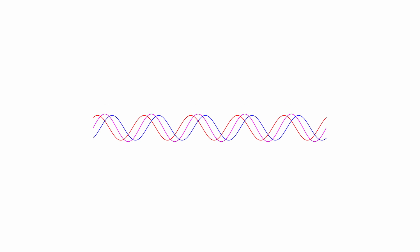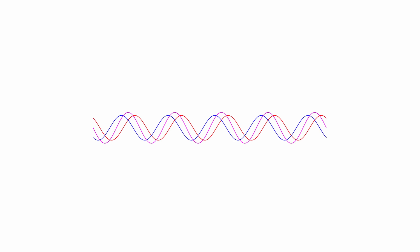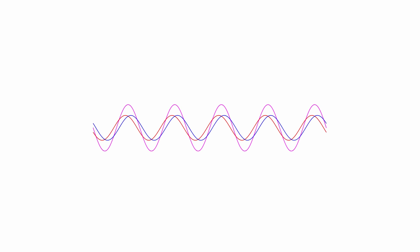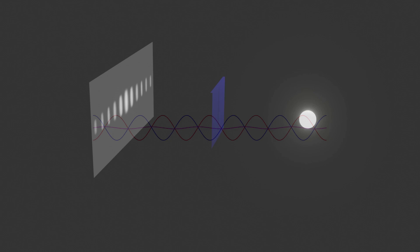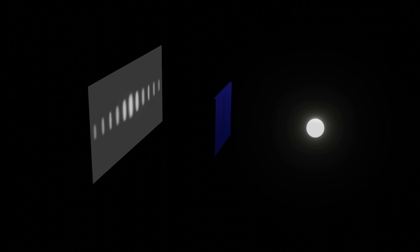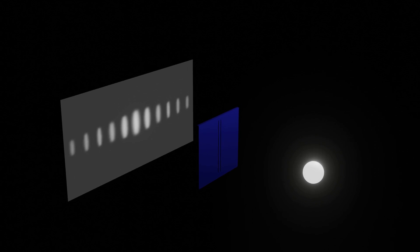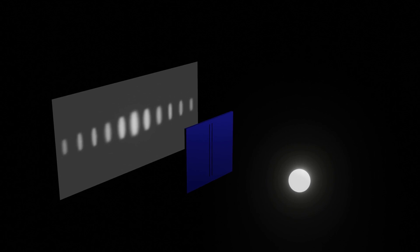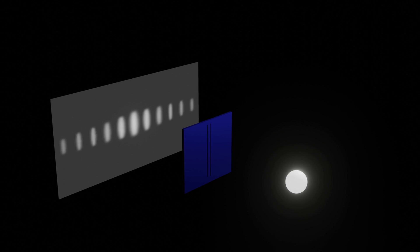The effects of constructive and destructive interference can also be observed in Thomas Young's famous double slit experiment. Light is shone through a pair of narrow slits, resulting in two beams of the same frequency. They are seen to produce fringes on a screen, suggesting not only that constructive and destructive interference is taking place, but also that light is indeed a wave.